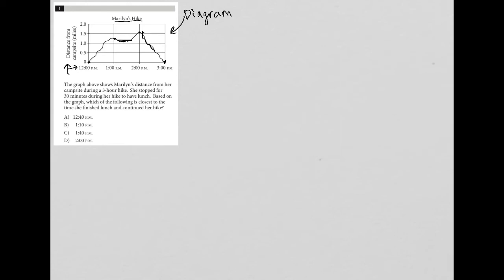The graph above shows Maryland's distance from her campsite during a three-hour hike. She stopped for 30 minutes during her hike to have lunch — it looks like that's here, so I'm just going to call that lunch there. Based on the graph, which of the following is closest to the time she finished lunch and continued her hike?